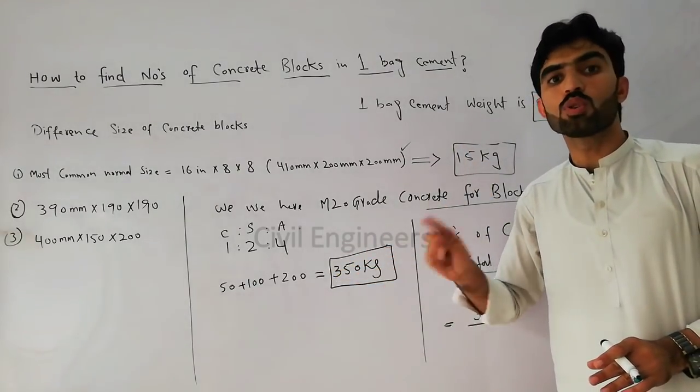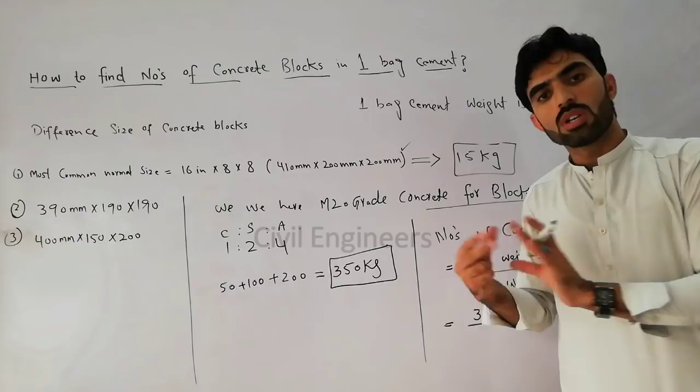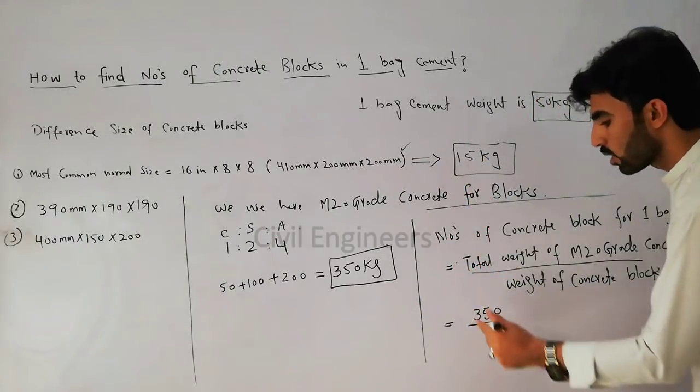You should do it practically, it will be good for you and give you good results. So 350 divided by 15, it will give us the number of concrete blocks.